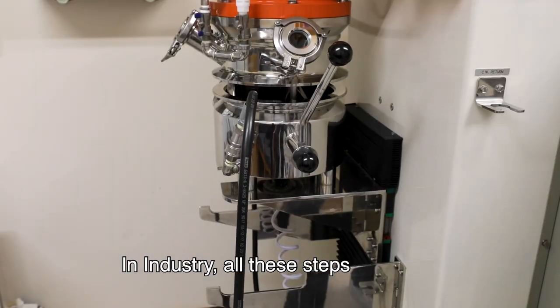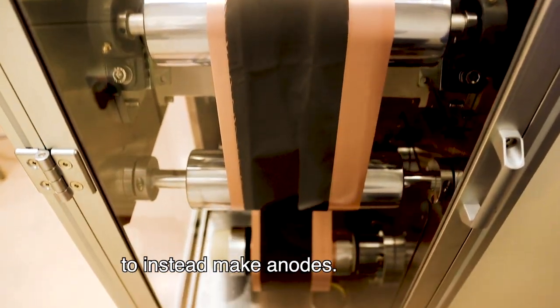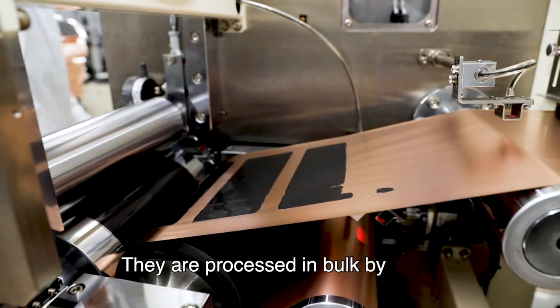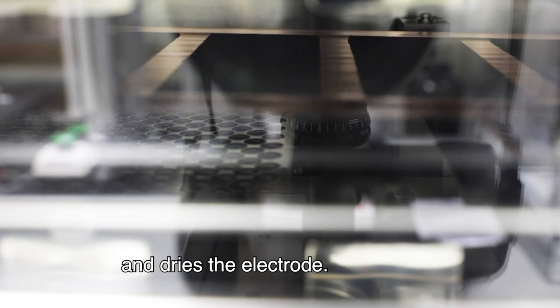In industry, all these steps are done on a larger scale. For instance, here we see the same process being used to instead make anodes. They are processed in bulk by using a roller, which simultaneously casts and dries the electrode.